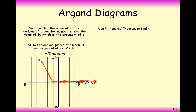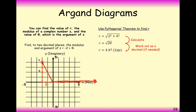Let's work out the modulus first. For minus 2 plus 4i, we use Pythagoras' theorem. Even though it's 2 to the left, the distance on the triangle is only 2 — triangles only have positive lengths. So we use 2 along the bottom and 4 up the side: the square root of 2 squared plus 4 squared gives 4.47 to two decimal places.